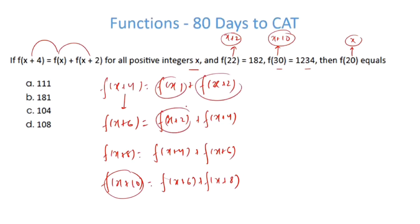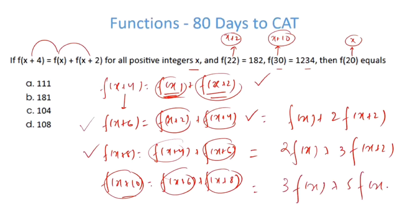I can take fx plus 2 here and fx plus 4 I'll substitute as fx plus fx plus 2. So I can write this as fx plus 2, fx plus 2. This fx plus 4 and fx plus 6. fx plus 4 is this and fx plus 6 is this. I just add them in terms of fx and fx plus 2. This becomes 2 fx plus 3 fx plus 2, and similarly fx plus 10 is fx plus 6 plus fx plus 8. This and this just add it: 3 fx plus 5 fx plus 2.